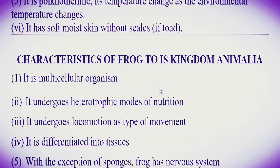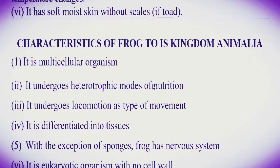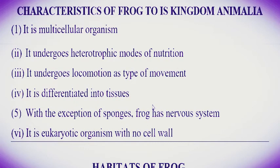Characteristics of the frog in Kingdom Animalia — reasons why we place it in Kingdom Animalia. Number one: it is a multicellular organism. Number two: it undergoes heterotrophic mode of nutrition. Number three: it undergoes locomotion as a type of movement. Number four: it is differentiated into tissues, meaning it has developed tissues. Number five: it has a nervous system. Number six: it is a eukaryotic organism with no cell wall.